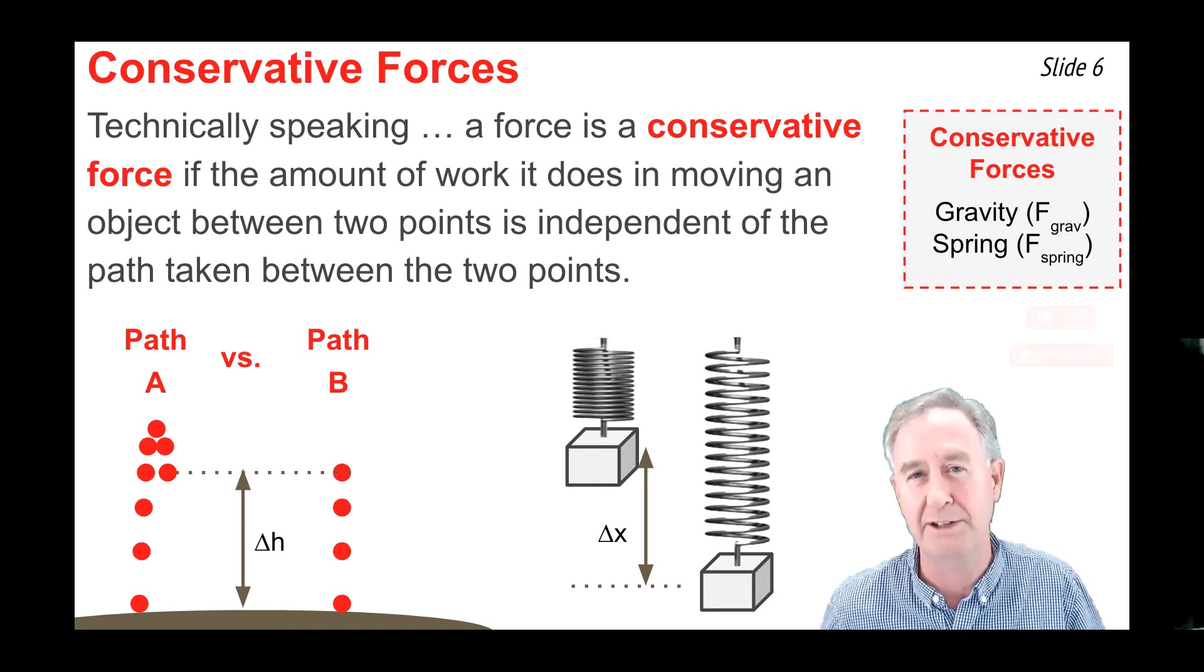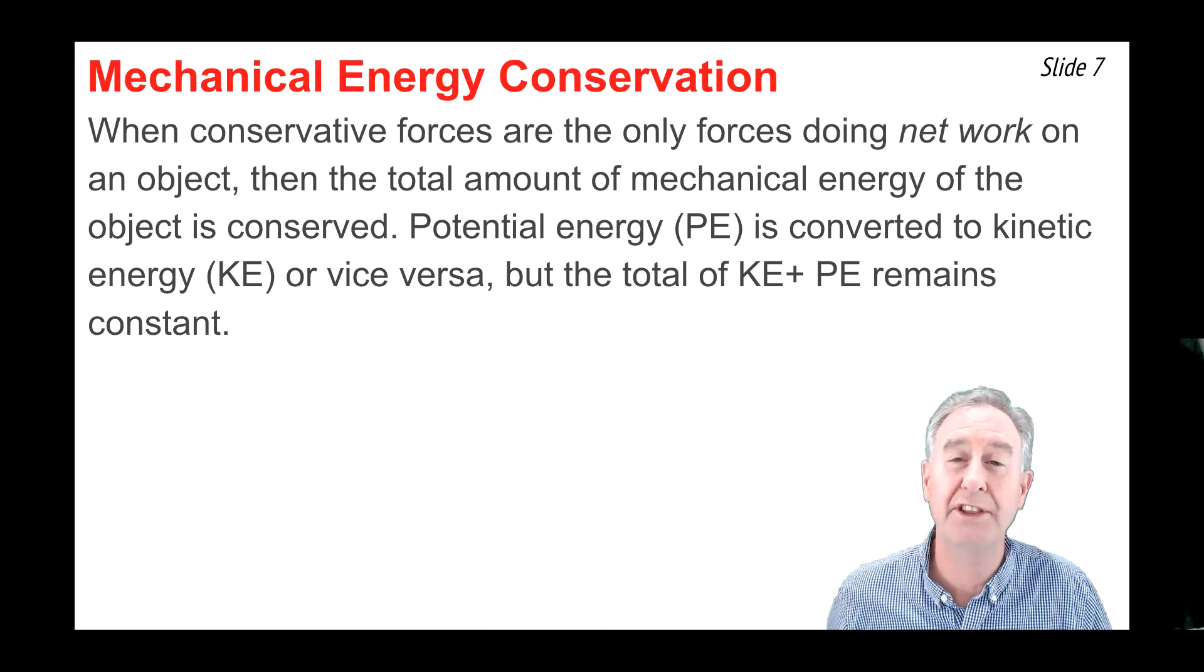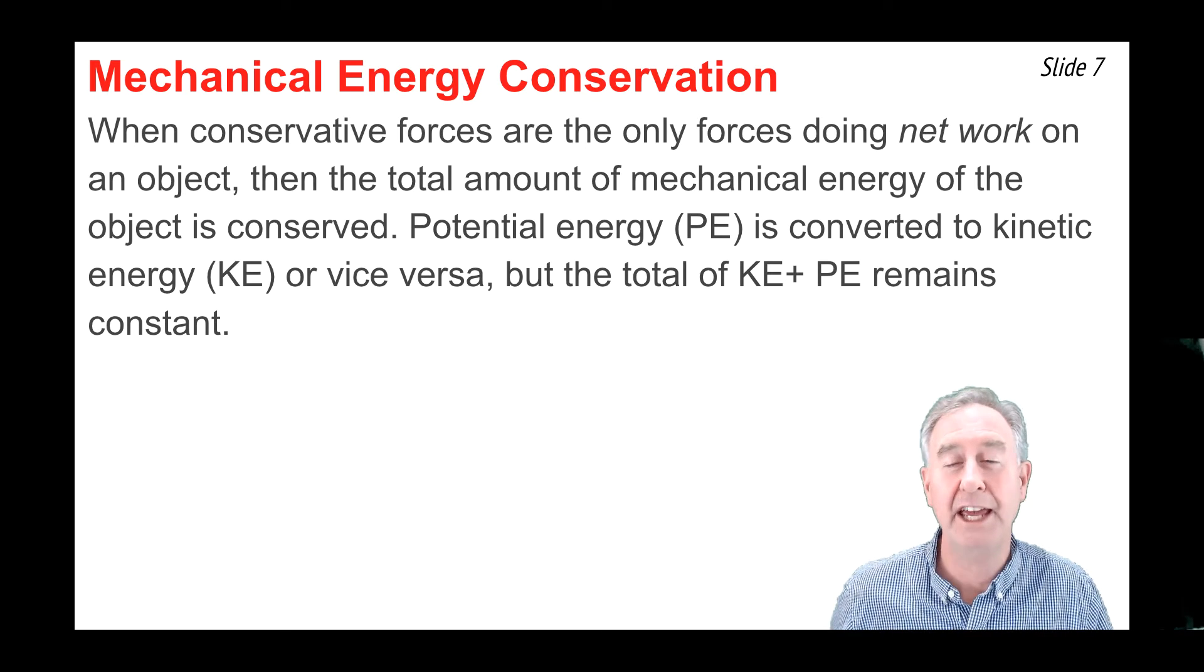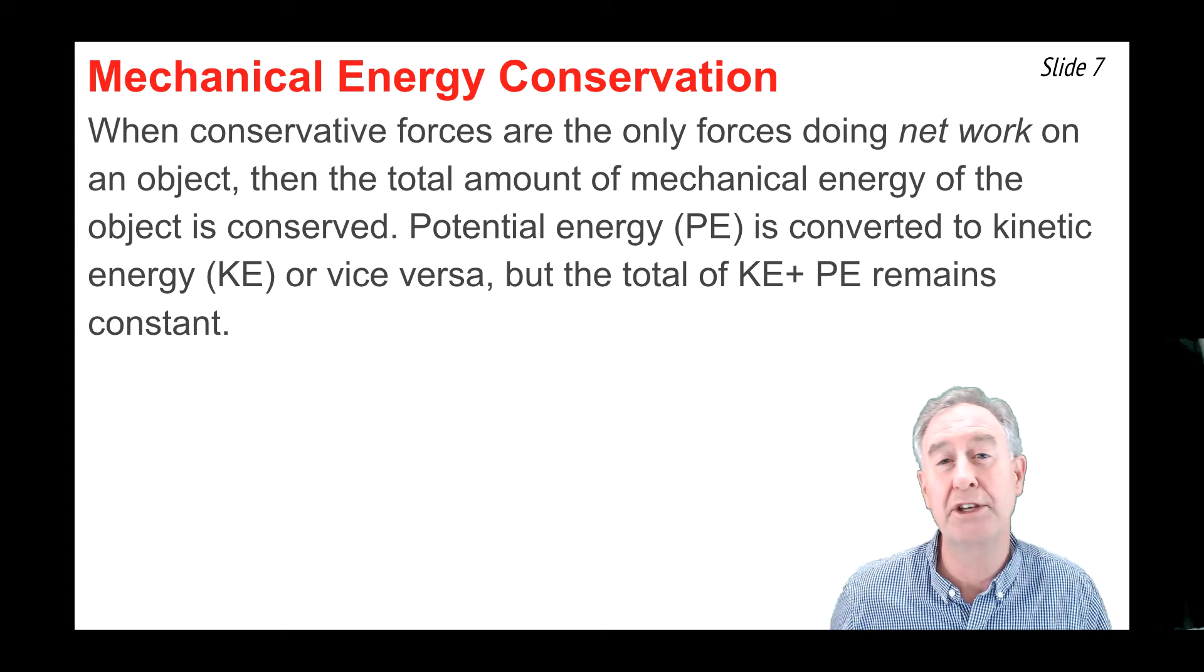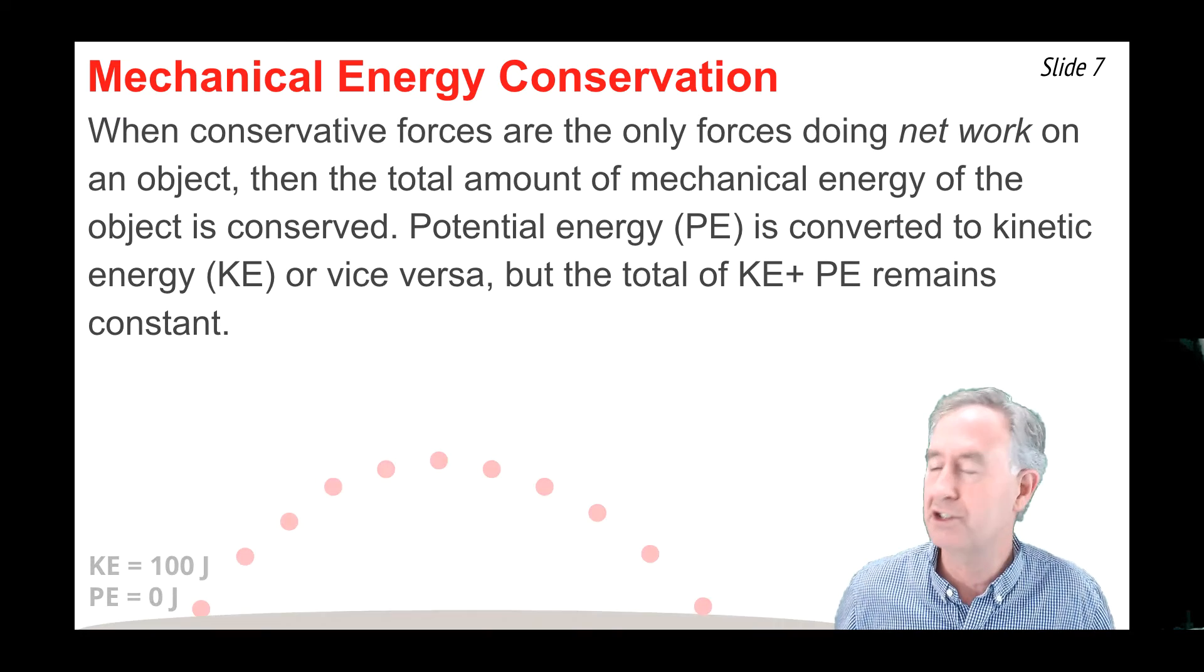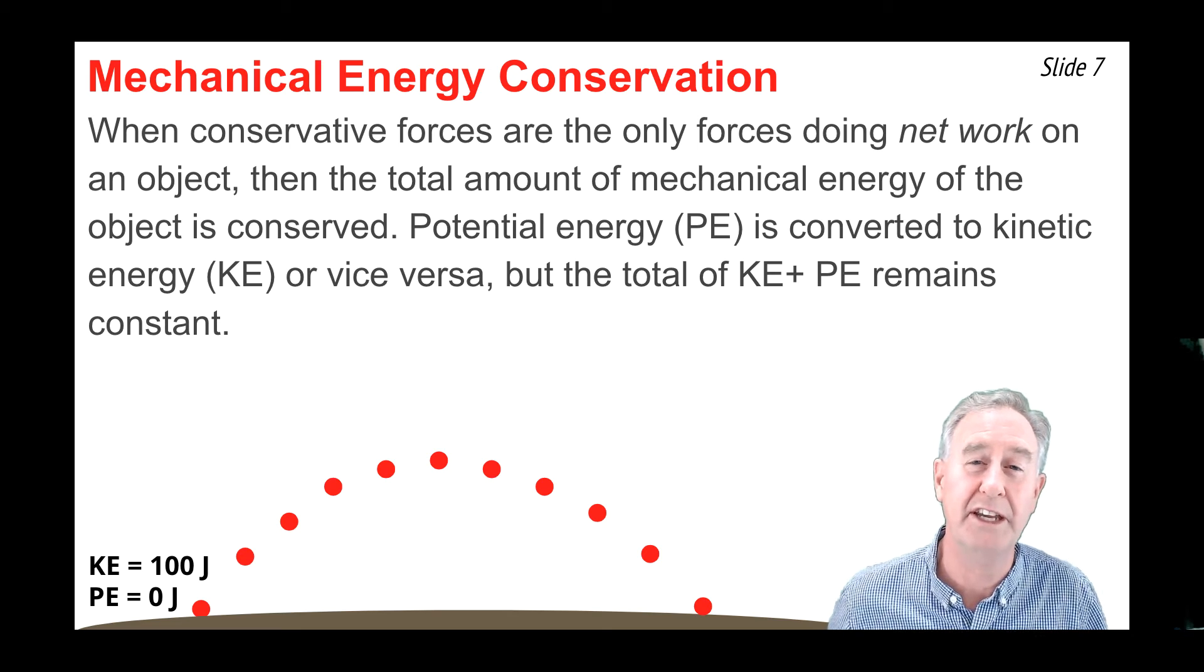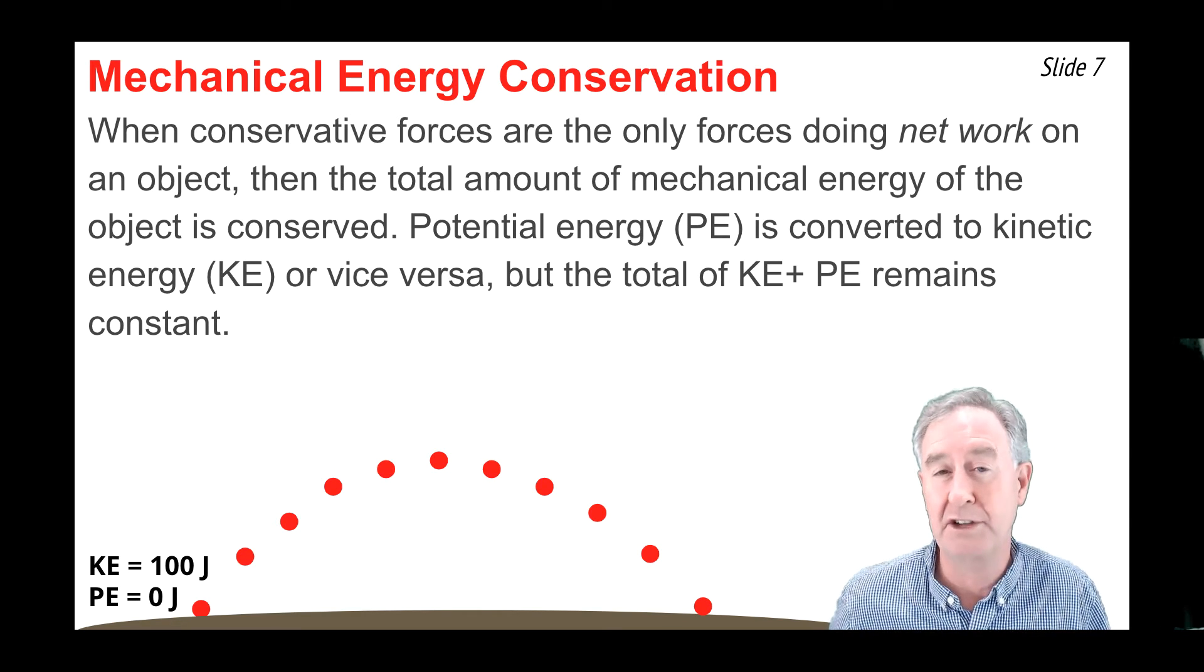When the only forces doing net work upon an object are conservative forces, then the total mechanical energy of the object is conserved. The KE might change to PE, or the PE back to KE, but the sum of KE plus PE, the total mechanical energy, would be constant. As an illustration, consider this diagram of a projectile launched with 100 joules of kinetic energy at ground level where the potential energy is zero. At the start of its motion, it has 100 joules of total mechanical energy, and the only forces doing work on the projectile would be gravity.